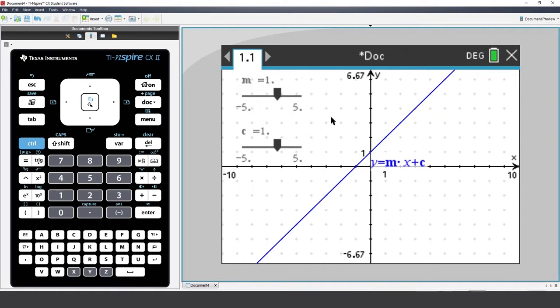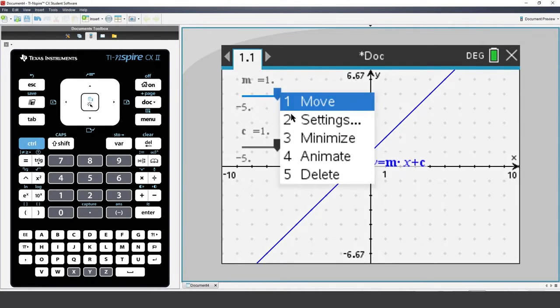Now, move the mouse over the top slider, m. Click on it, then press Ctrl and Menu. Then select Minimize.